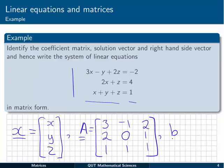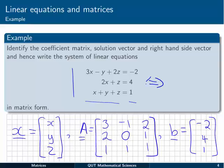Finally, the right-hand side vector b is given by the constants on the right-hand side: we write minus 2, 4, and 1. With A, x, and b written in this way, we can say that the system of three equations is equivalent to the matrix equation Ax equals b.